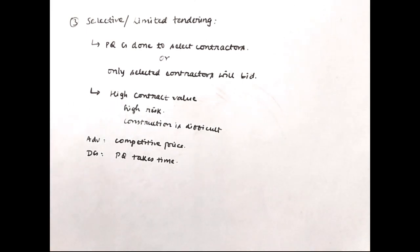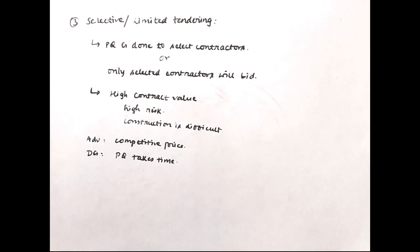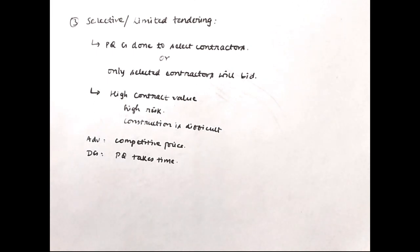The advantage of selective tendering is highly competitive prices, since the number of bidders is less than open tendering but more than negotiated tendering. A small disadvantage is that the pre-qualification process can take some time. So to summarize: we covered what is a tender, how it differs from a contract, and the three types of tendering — negotiated, open, and selective or limited. Please like the video, subscribe to the channel, and check out other videos on tender, contracts, and billing.